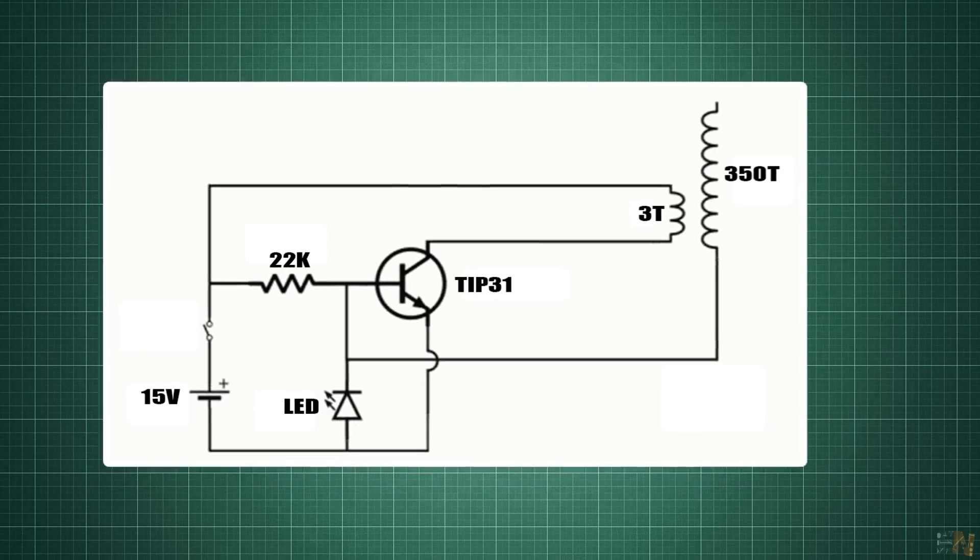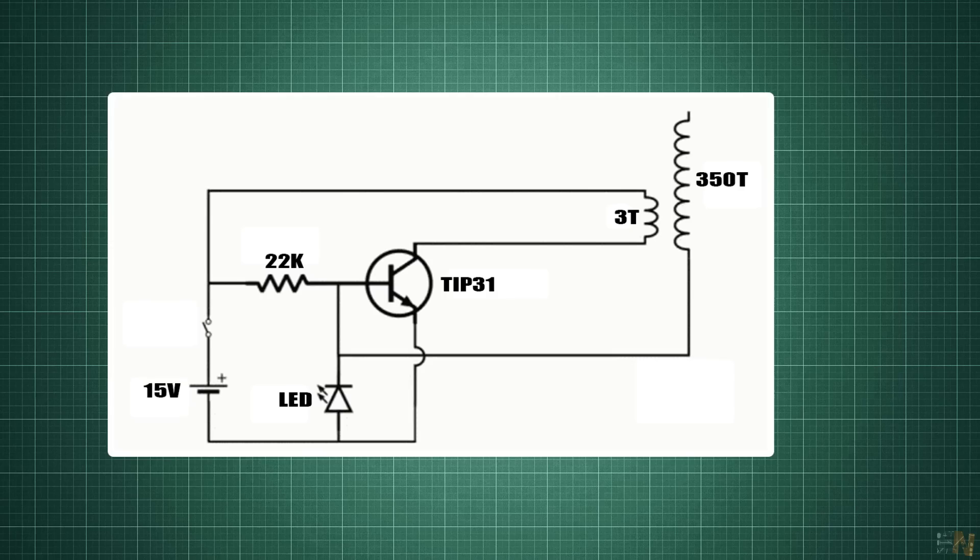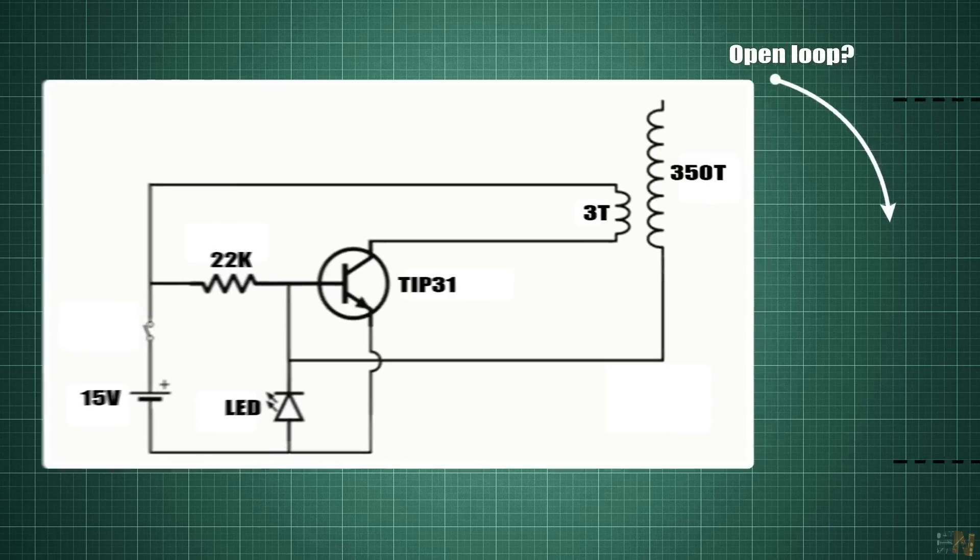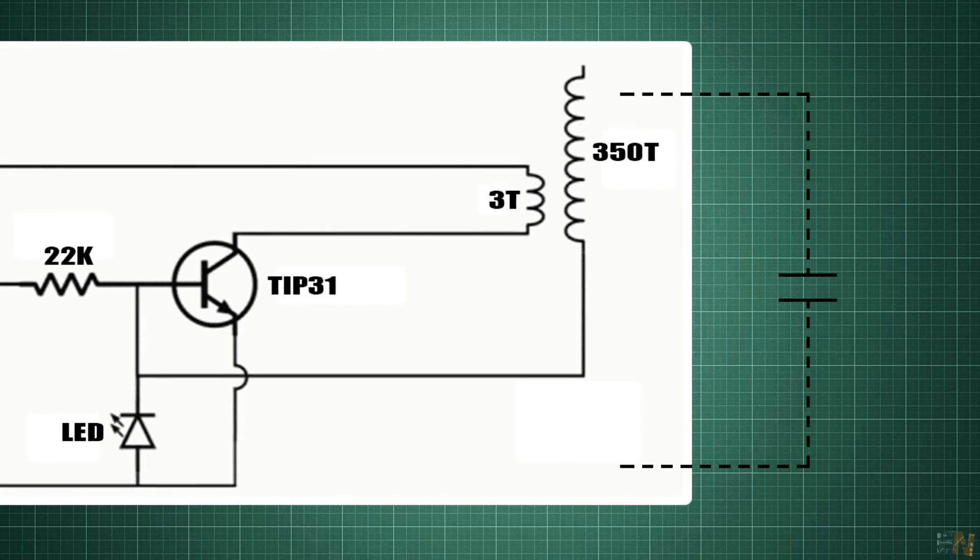And again, if you wonder, how is the negative voltage created by the secondary have any effect over the transistor base since there is no closed loop? Well, once again we have the parasitic capacitance created by the air around the coil. So in that way we have a closed loop and the voltage on the secondary could affect the transistor base.